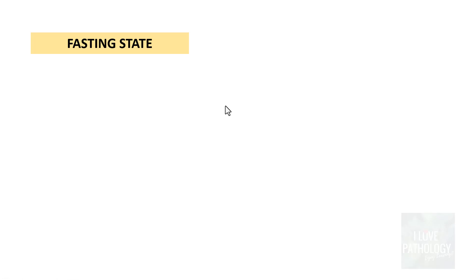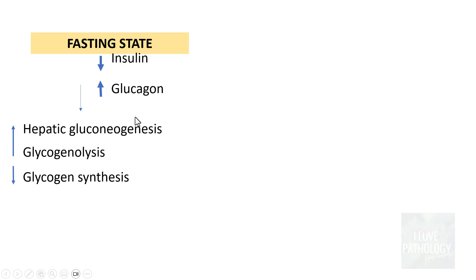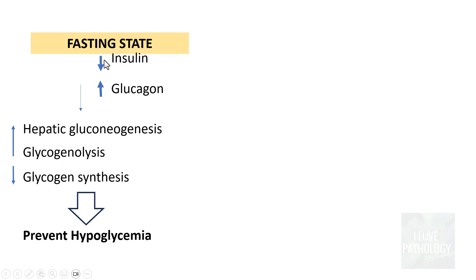Let us see what happens in the fasting state. In the fasting state, insulin levels are low and glucagon levels are high, which means there will be an increase in hepatic gluconeogenesis, an increase in glycogenolysis, and a reduction in glycogen synthesis. This means that in the fasting state, there is a mechanism that prevents hypoglycemia, because of decreased insulin and increased glucagon levels.